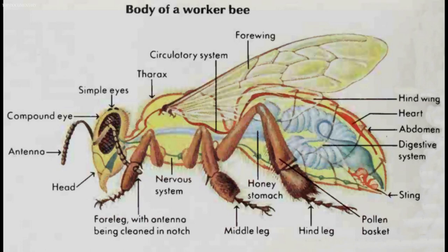Bee hair is not true hair, which grows only on mammals, but it resembles true hair. When a bee travels from flower to flower, grains of pollen stick to these hairs. Honey bees range in color from black to shades of light brown. Drones are slightly larger than workers, and queens are longer than both workers and drones.